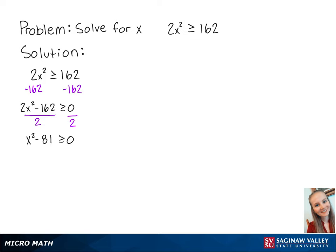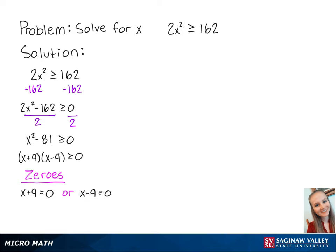Now we can factor the left side to become (x + 9)(x - 9), which is greater than or equal to 0. We can find the values of x that make the left side equal to 0 by solving x + 9 = 0 or x - 9 = 0, giving us x = -9 and x = 9.